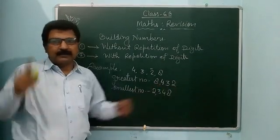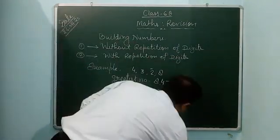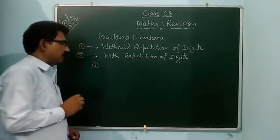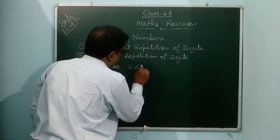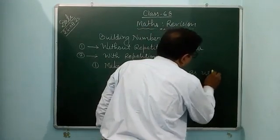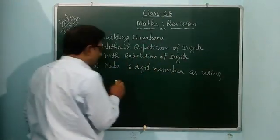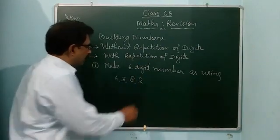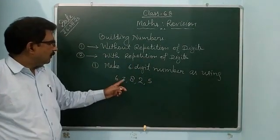Digits are not repeated here. Now the second type is with repetition of digits. For example, make a 6-digit number using the digits 6, 3, 8, 2, and 5.